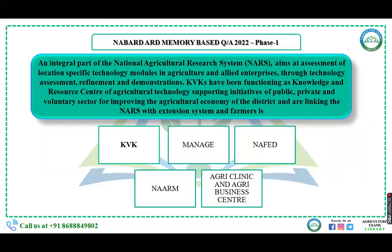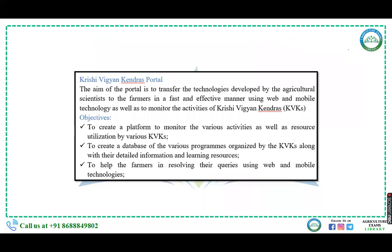One question was regarding KVK — Krishi Vigyan Kendra. KVK is an integrated part of the National Agriculture Research System (NARS) and aims at assessment of location-specific technology modules in agriculture and allied enterprises through technology assessment, refinement, and demonstrations. KVK functions as a knowledge and resource center for agriculture technology, supporting public, private, and voluntary sector initiatives, linking the national agriculture research center with the extension system and farmers.